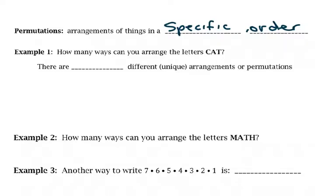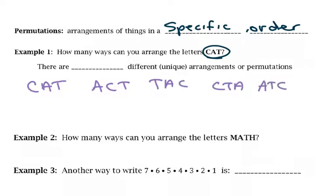So when we talk about words and the arrangements of letters, that's a permutation. Because if we take the letters in cat, how many different ways can we arrange that? We can do cat, act, tac, cta, atc, and tca. Not all of those make an English word, but the order that we put the letters in does matter. So there are a total of six different unique arrangements or permutations of the letters c, a, and t.